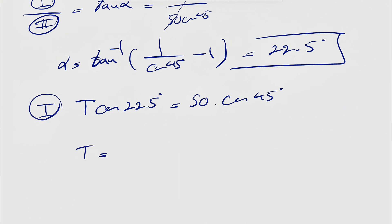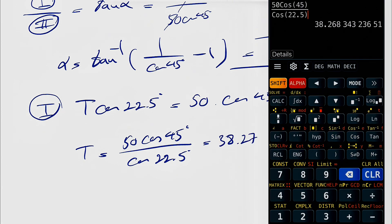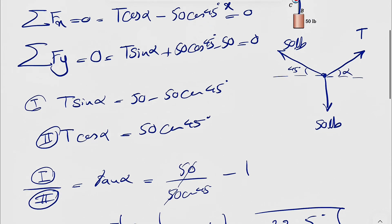So the T in here would be 50 cosine of 45 divided by cosine of 22.5. Let's see what we get. So the T will be 38.27 pounds. So we found the tension in the cable.